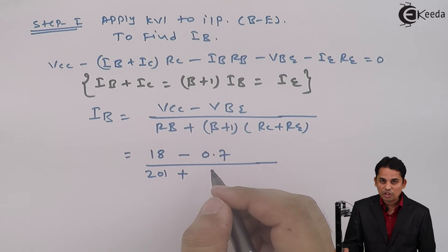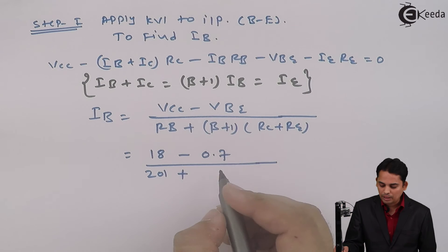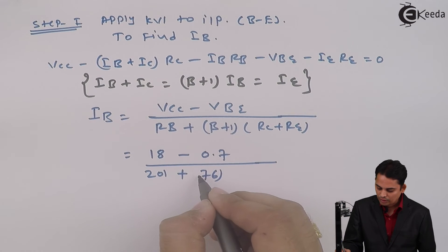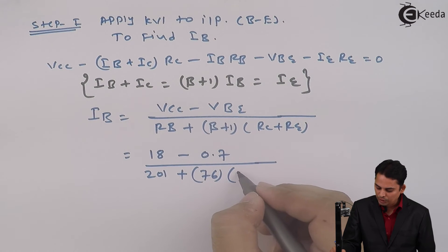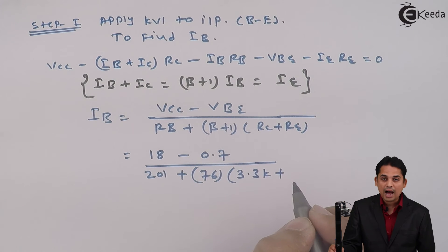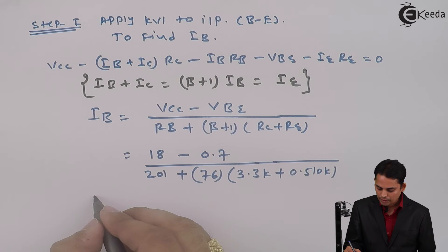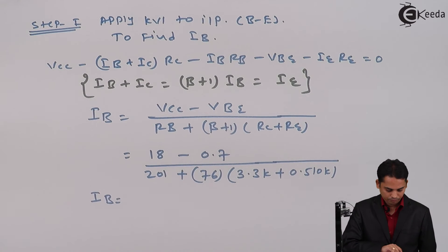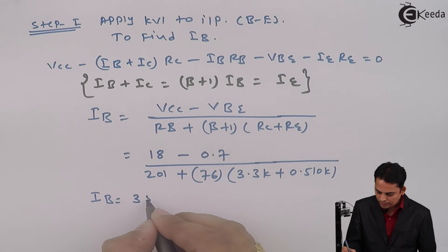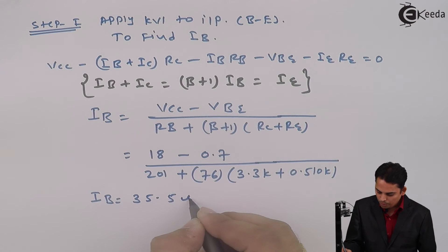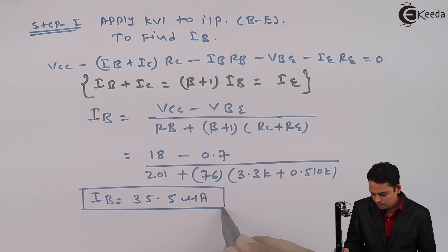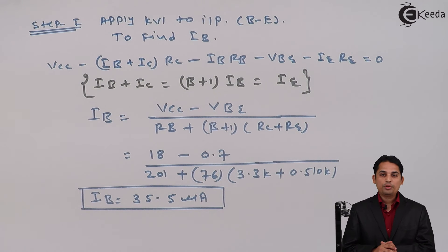Divide by RB is 201 kilo ohms. Beta they have mentioned as 75, so beta plus 1 will become 76. RC is given as 3.3K plus RE is given as 0.51K. If we solve this, value of IB will be 35.5 micro amperes. So from step 1 we have got value of base current as 35.5 micro amperes.